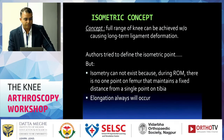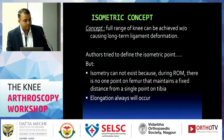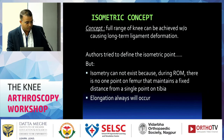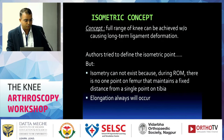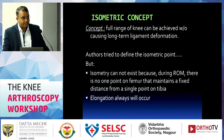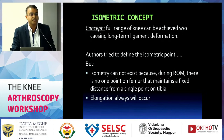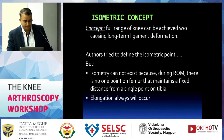What is the isometric concept? The concept is that full range of knee motion can be achieved without causing long-term ligament deformation. However, various authors have tried to define the isometric point, and it cannot truly exist because during range of motion there is no one point on the femur that maintains a fixed distance from a single point on the tibia. So elongation will always occur.